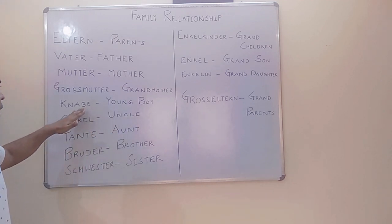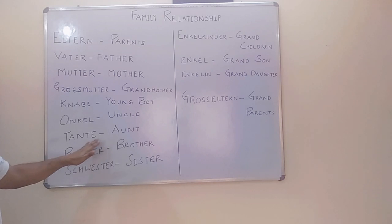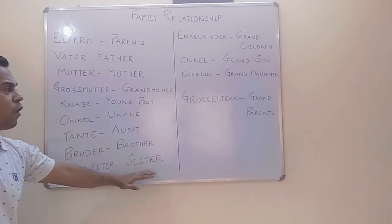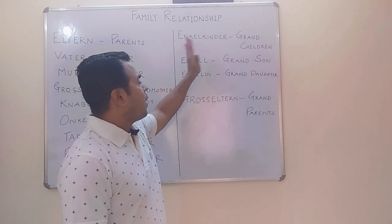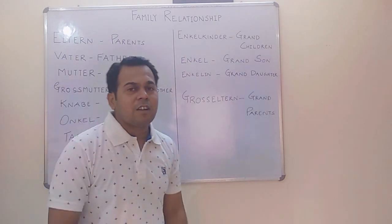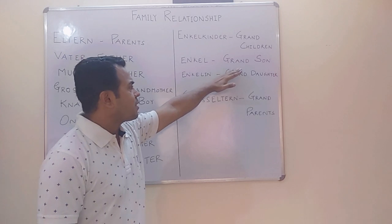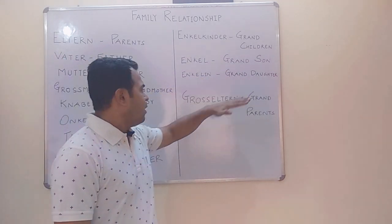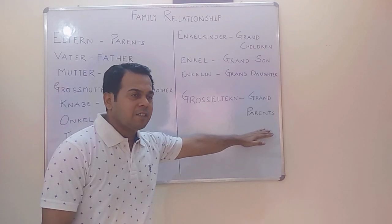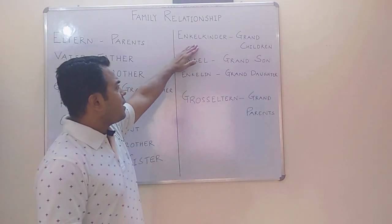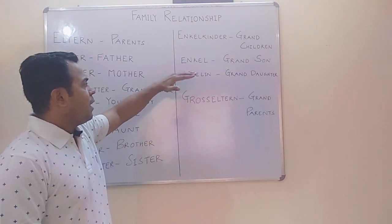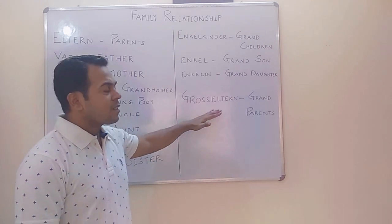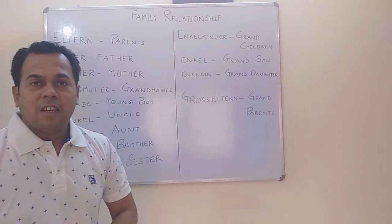Next, Onkel for uncle, and Knabe is for young boy. Tante is for aunt, Bruder is for brother, and Schwester is for sister. Now let's move to the right section. Next, Enkelkinder — Enkelkinder means grandchildren. Next, Enkel means grandson. Enkelin means granddaughter. And Großeltern means grandparents.